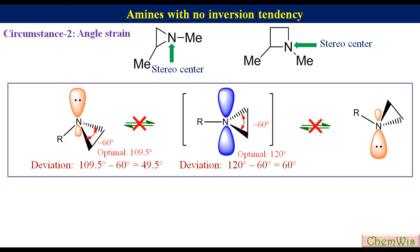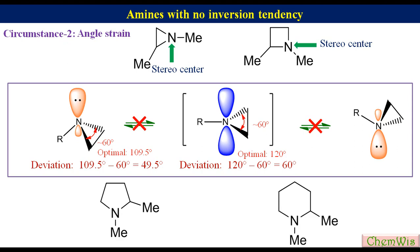A similar explanation applies to azetidine. In five-, six-, and larger ring systems, this ring strain is well tolerated and thus higher ring systems show amine inversion. For example, in pyrrolidine and piperidine derivatives, the nitrogen, despite having three different substituents, does not act as a stereocenter.